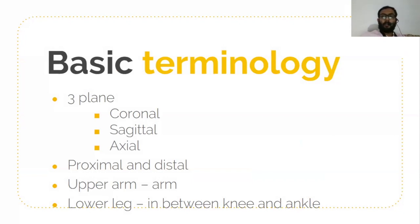The coronal plane divides our body into two equal halves — anterior and posterior. The sagittal plane divides it into two equal halves — right and left — through the middle of the body. The axial plane divides into superior and inferior halves, and is also known as the transverse or horizontal view.